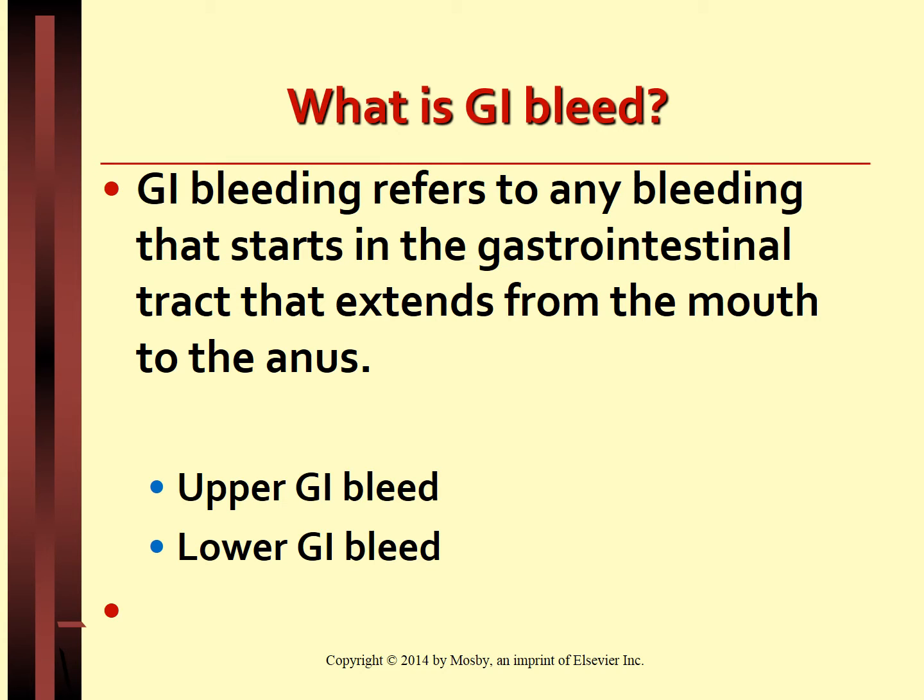GI bleed refers to any bleeding that starts in the gastrointestinal tract, which extends from the mouth to the anus. Upper GI bleed refers to bleeding from the mouth to the proximal part of the ligament of Treitz, which is the duodenojejunal junction. Any bleeding distal to the ligament of Treitz is referred to as lower GI bleed.